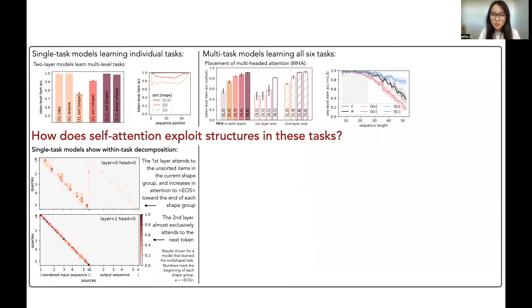The models do predict fewer sequences 100% correct as we test them on longer sequences, but they only make less than 5% errors per sequence. And perhaps not surprisingly, the multitask models develop task shared computation.